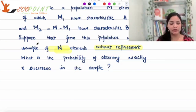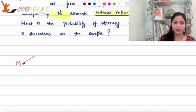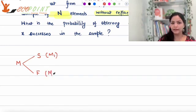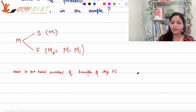What is the probability of observing exactly x successes in the sample? What we are doing here is we are taking out a sample of capital N from the entire population capital M, out of which we know that certain number are successes, certain numbers are failures and we want x successes. The total of M population is divided into successes and failures.